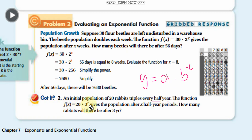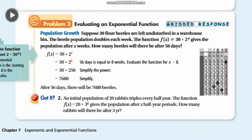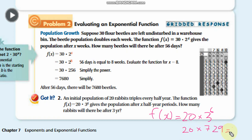The rabbit population triples every half year. The given function is f(x) equals 20 times 3 to the power x, where x is the number of half years. We need the population after 3 years. Three years contains 6 half years, so x equals 6. Therefore f(6) equals 20 times 3 to the power 6. Since 3 to the power 6 equals 729, we get 729 times 20 equals 14,580 rabbits.